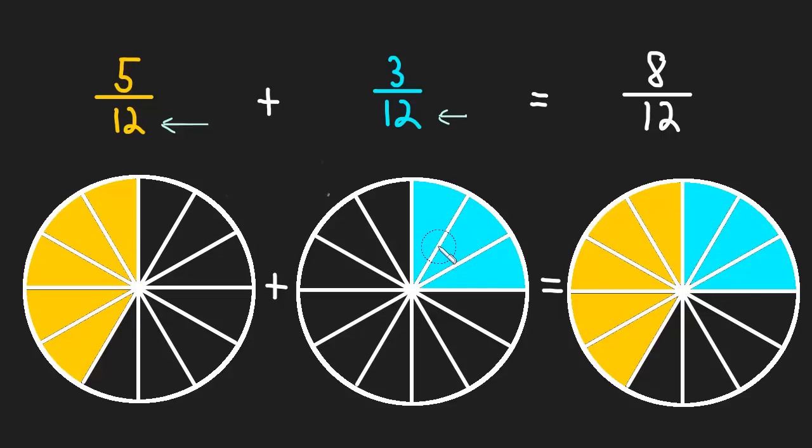We have five out of the twelve, plus three out of the twelve, we get eight out of the twelve. Okay, simple enough. What happens though if we have something a little bit different?